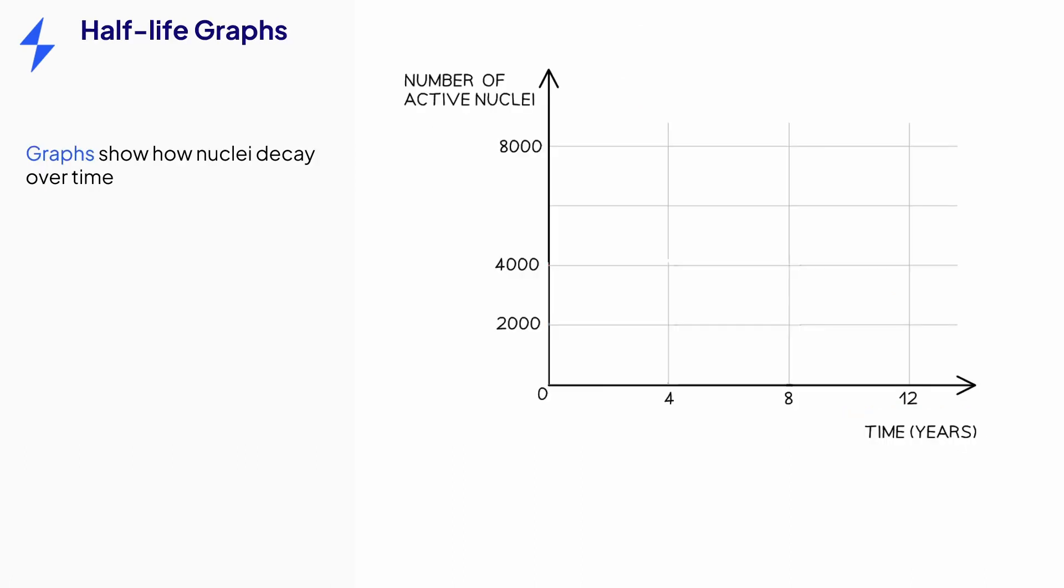Changes in the activity of a sample over time can be plotted on a graph. These graphs can tell us the half-life of a sample. The y-axis of these graphs may show the number of radioactive nuclei, or the activity of the source in counts per second.